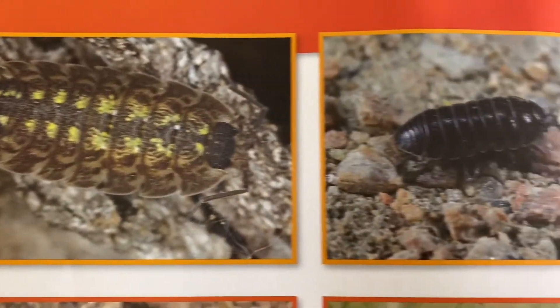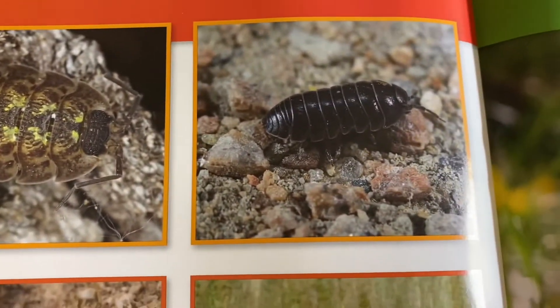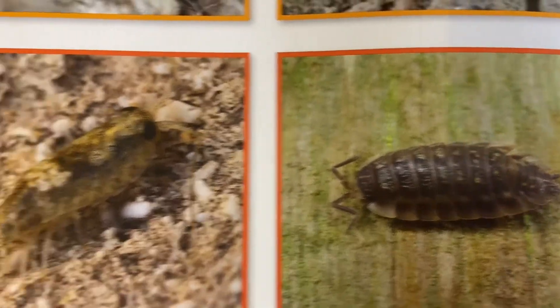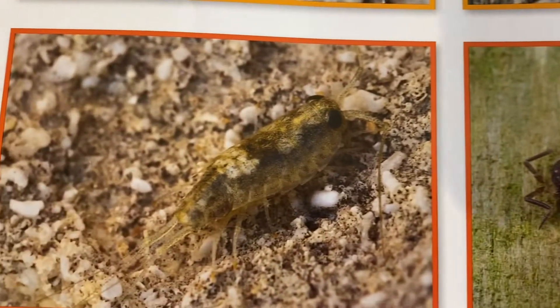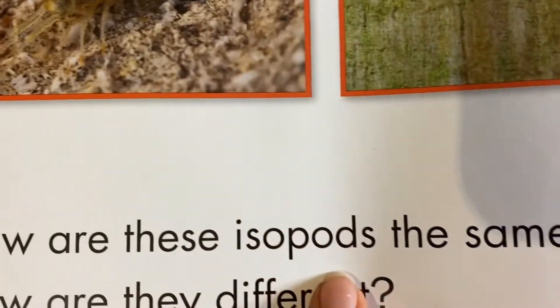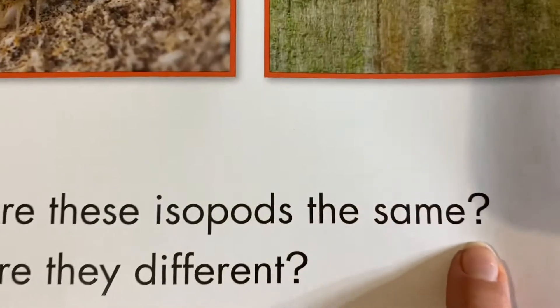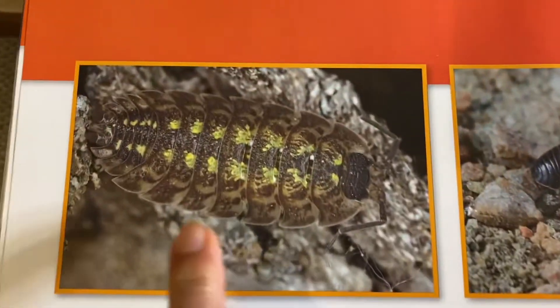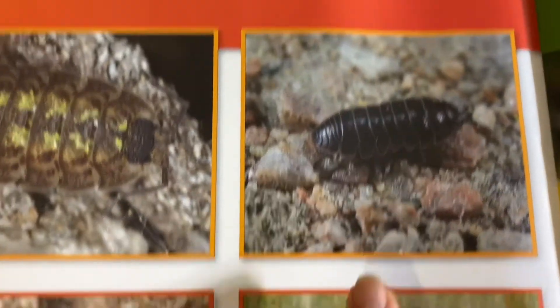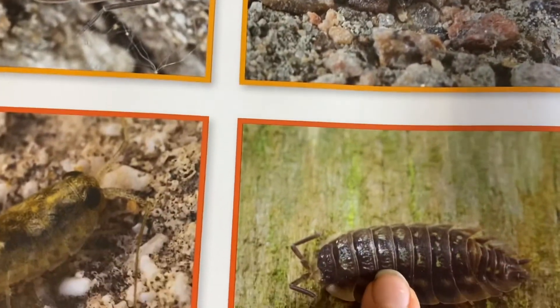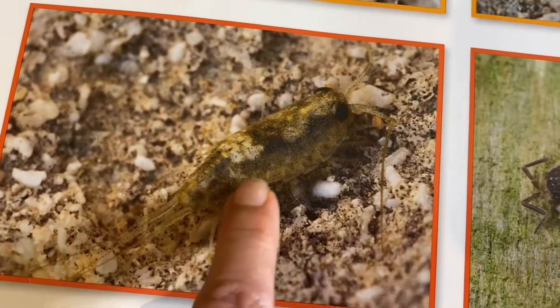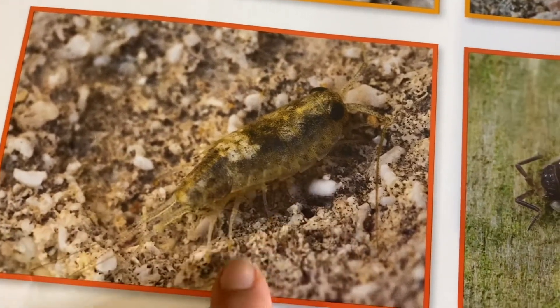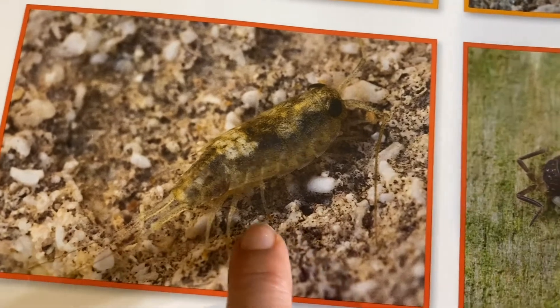Here are pictures of the different types of isopods. How are these isopods the same? How are they different? Let's see — do they all have the segments? They do all have the segments, and they all have their legs.